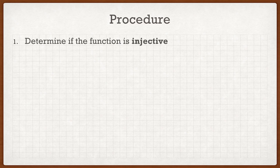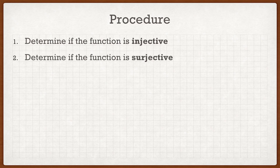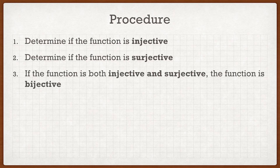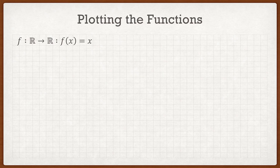First, we determine if the function is injective. Then we ask: is the function surjective? Those are the only two main steps you need to remember. If a function is both injective and surjective, then we say that the function is bijective. And if it's none of them, well then you say it's none of the above.